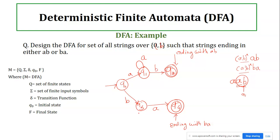For q3: we reach q3 by reading 'b'. Getting 'a' moves to q4. But if we get 'b' again instead of 'a', we need to end with 'ba', which still requires an 'a' after. Since q3 itself generates 'a' and leads to q4 ending with 'ba', there should be a self-loop of 'b' at q3. Now q0, q1, and q3 are all done with both inputs.